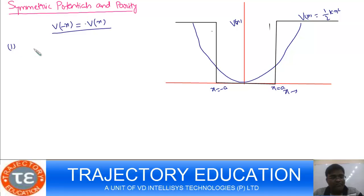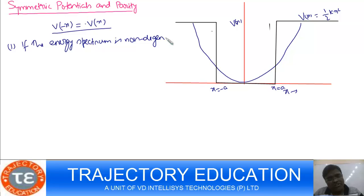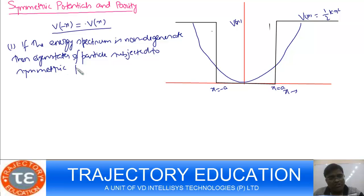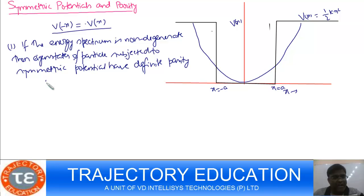Now, if the potential is symmetric, I will divide it into two cases. Case one: if the energy spectrum is non-degenerate, then the eigenstate of a particle subjected to such a symmetric potential will have definite parity. Definite parity means the parity of the wave function describing the eigenstate will have either even parity or odd parity.